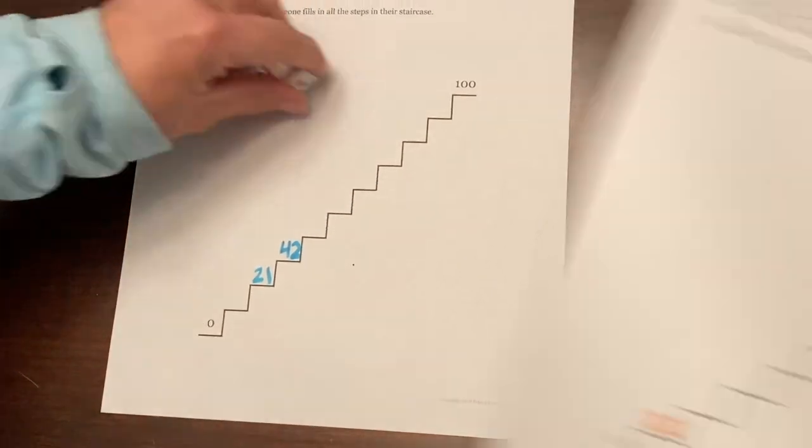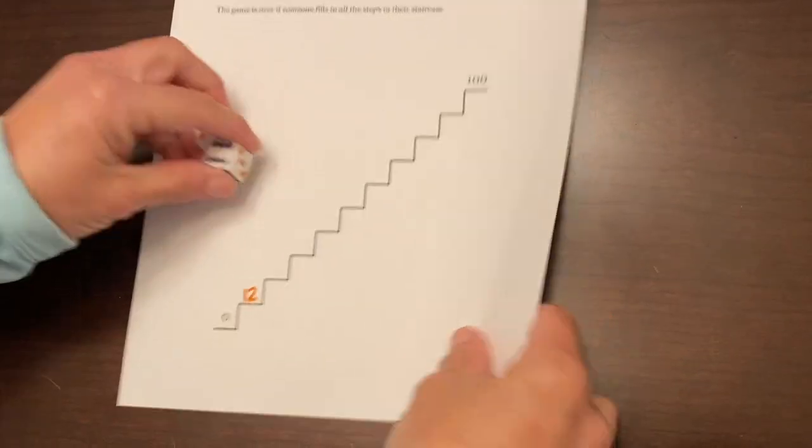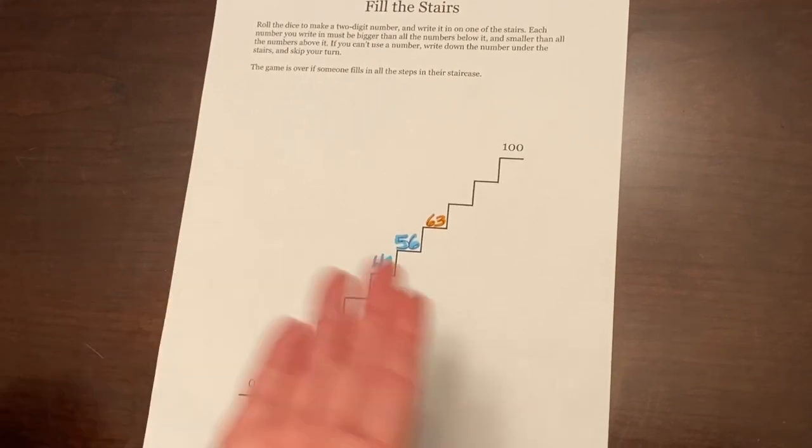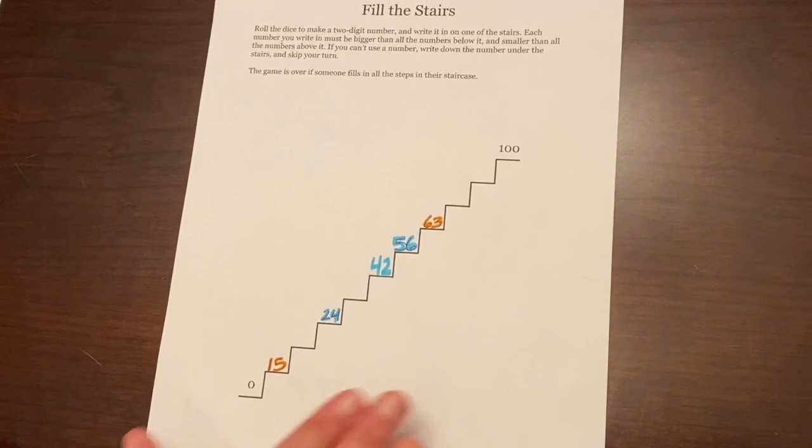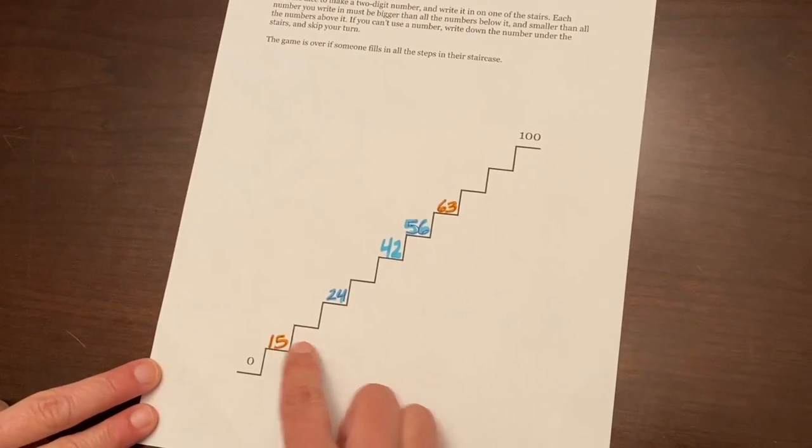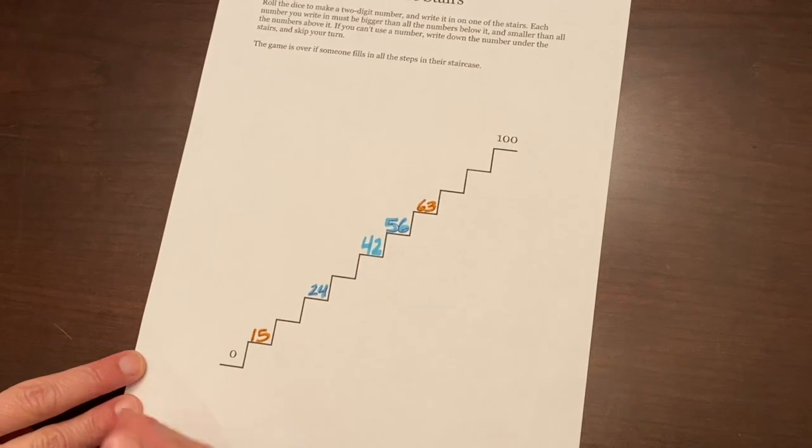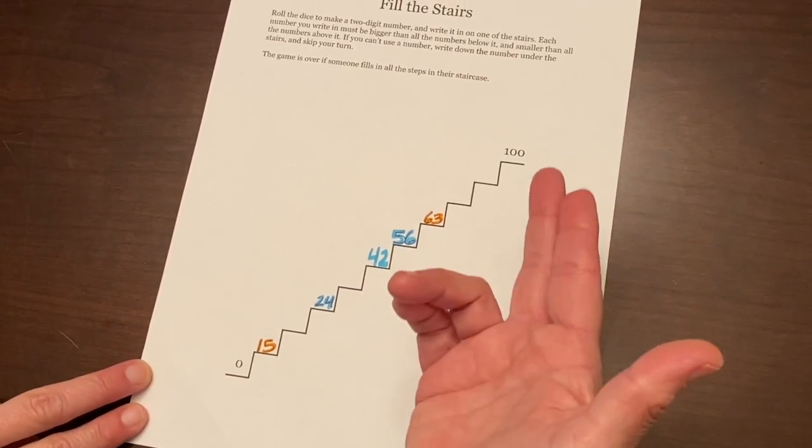Player two takes their turn on their game board and so forth. To step this up a little bit, make it a little bit more creative, you could have the whole family play or two players play at the same time on the same game board. So we have a game already started here. Player one is in blue and player two is in orange.